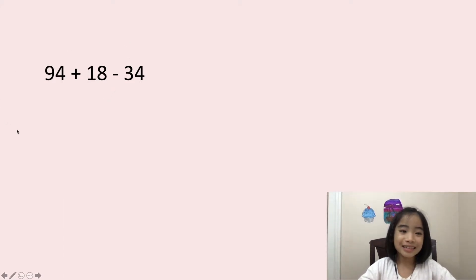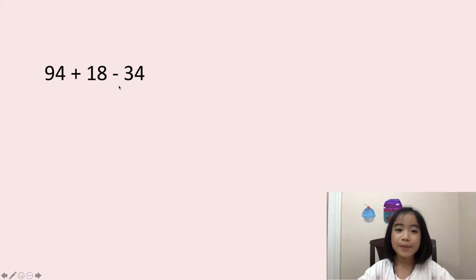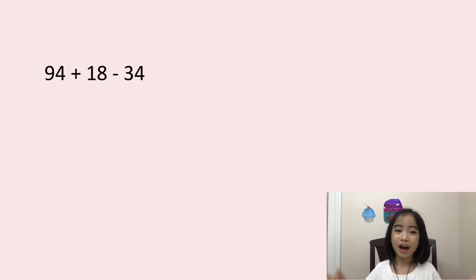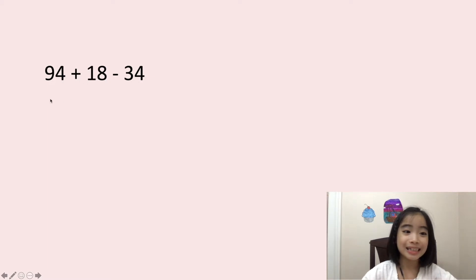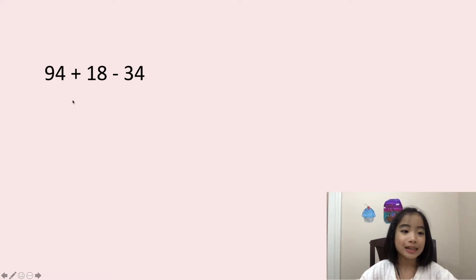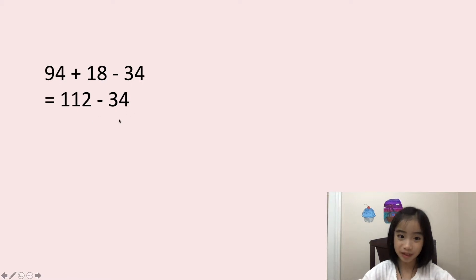Now, let's look at this expression. It's 94 plus 18 minus 34. You can always get the right answer by working from left to right. So let's do it. 94 plus 18 equals 112, minus 34 equals 78.